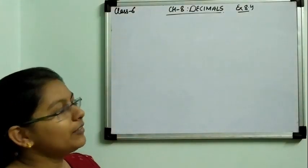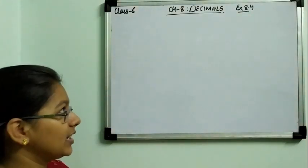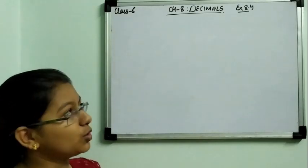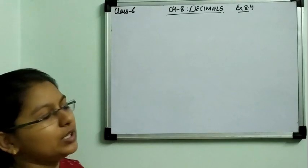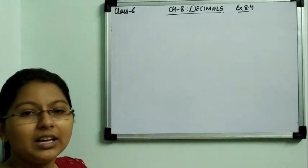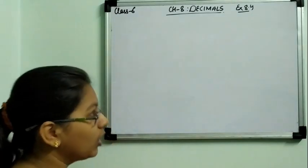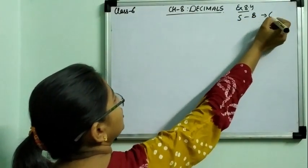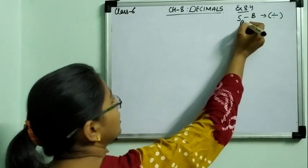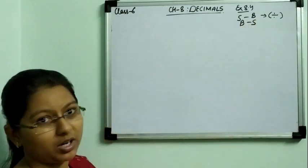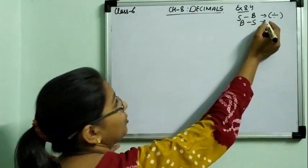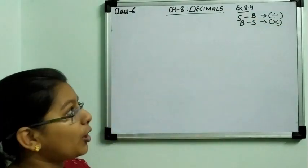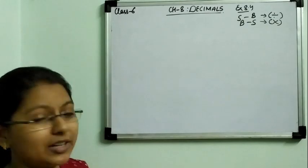Good morning students. Today we are going to continue our exercise 8.4. In the previous video we understood the basic method of unit conversion. We learned that to convert any smaller unit to a bigger unit we divide, and to convert any bigger unit to a smaller unit we multiply — and this rule is completely opposite to what we face in our daily life.